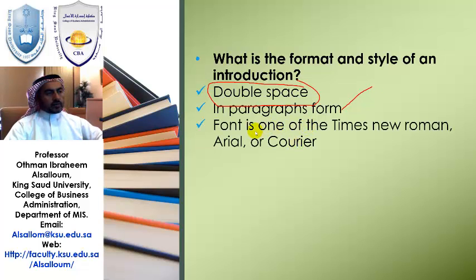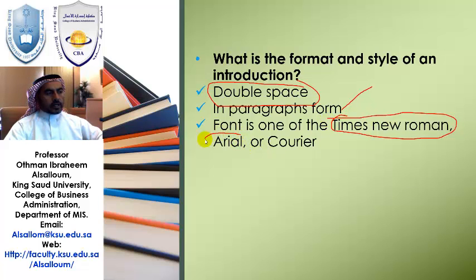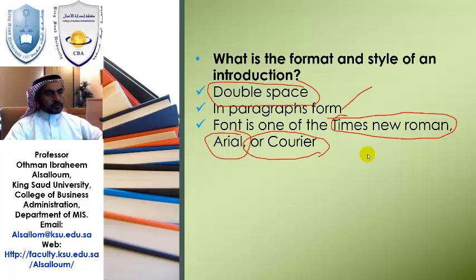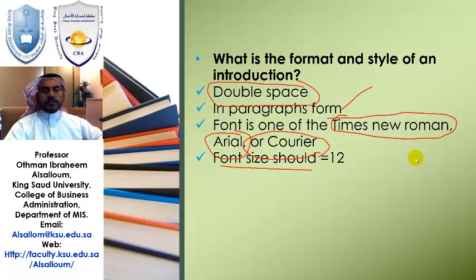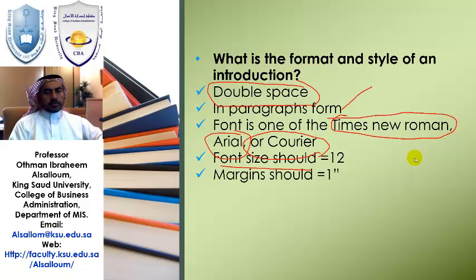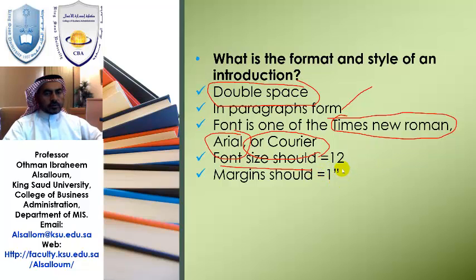Also, you should use a general or common font, such as Times New Roman, Arial, or Courier. All three of these fonts are fine to use for the literature review. You also have to set your font size to 12. The margins on all four sides of your page should be set to one inch.